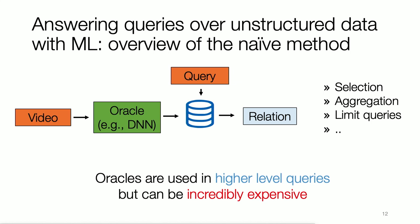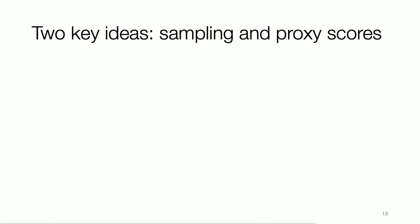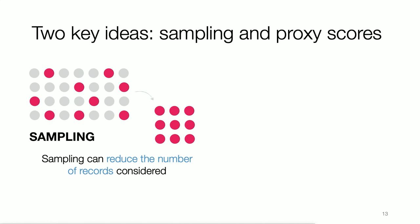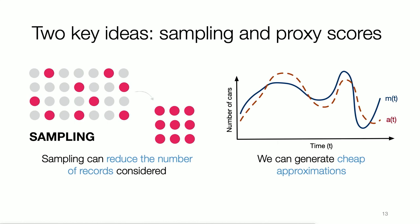I'll describe how to accelerate these query types using two core primitives: sampling and proxy scores. Sampling is an old idea used in approximate query processing, which can reduce the number of records considered by looking at a small fraction of the data. We'll also focus on the technique of using approximations — where M might be the expensive method and A might be an approximation which is noisy but still fairly close to the ground truth.